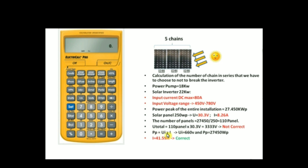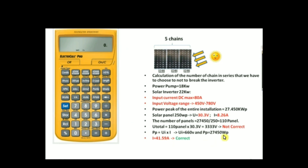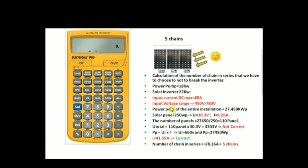We have the power peak of the installation. In one-phase mode, the power peak equals volts multiplied by current. We have already chosen the voltage to feed the inverter, which is 660 volts. We need to check that the resulting current is correct and does not exceed the inverter's input DC max of 80 amps.